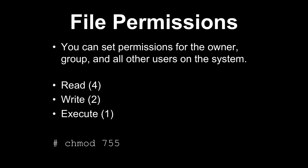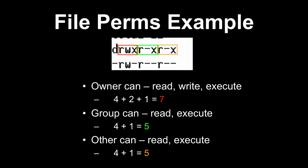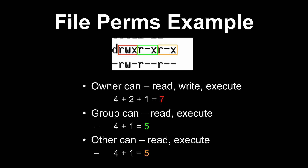If a file were to have read, write, and execute permissions, we add those numbers up and say that its permission is 7. So in the example we're looking at, the permissions for a given file are 755. The number 7 means the owner can read, write, and execute the file — read is 4, write is 2, and execute is 1, so we add all of those up and get 7.